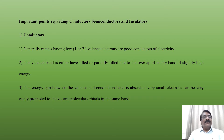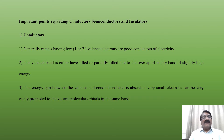There are some important points regarding conductors, semiconductors, and insulators. We are all familiar with these three. We will see their important characteristics one by one. First, we see conductors: generally metals having few — one or two — valence electrons are good conductors of electricity.